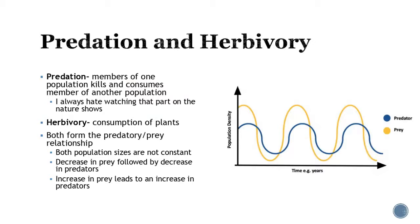One thing discussed in this section is predation and herbivory. In the predator-prey relationship, if you look at the graph, they look very similar because they depend on each other. If the predator doesn't have the food source, the number of predators will go down. If the food source suddenly increases, the prey population will increase too. With predation, you're going to have to kill or consume another member of another population.